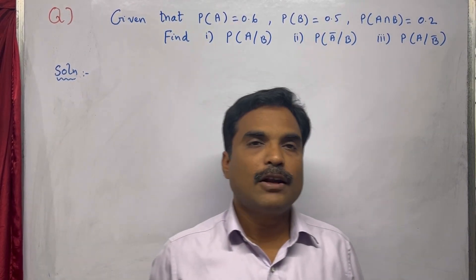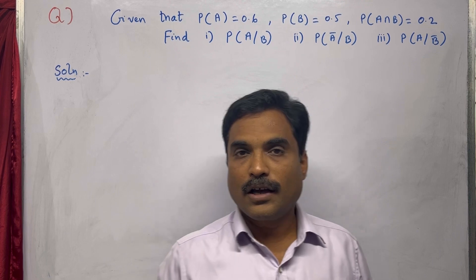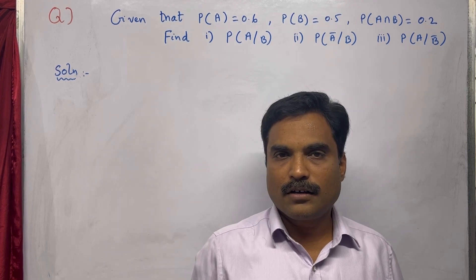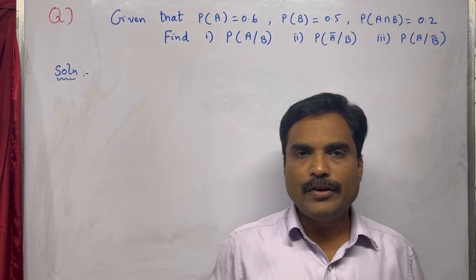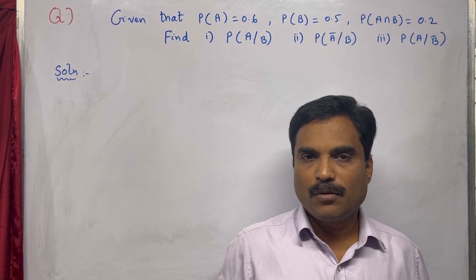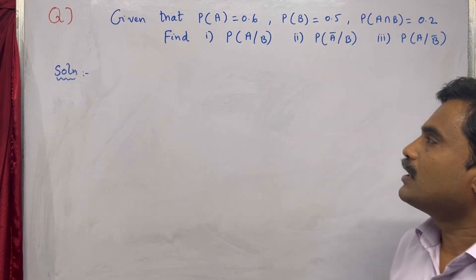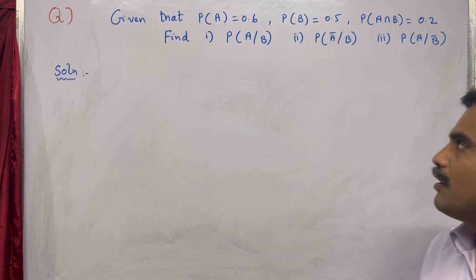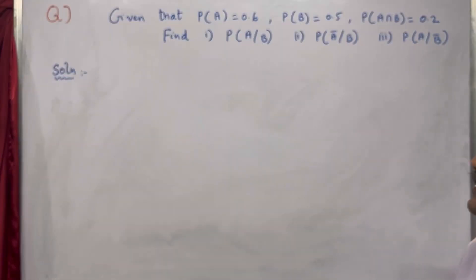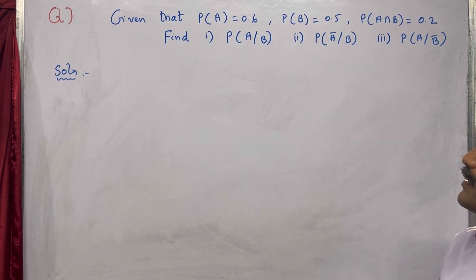Hi dear friends, welcome to my channel Yanam Takshasila. In this new video, I am going to solve a mathematical problem under the topic probability. The problem is: given that P(A) = 0.6, P(B) = 0.5, P(A∩B) = 0.2, you need to find P(A|B).